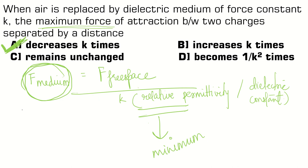So here, for the maximum force of attraction between two charges, if this force must be maximum, then k will be minimum. So decreases k times. Hope this is clear. Thank you.